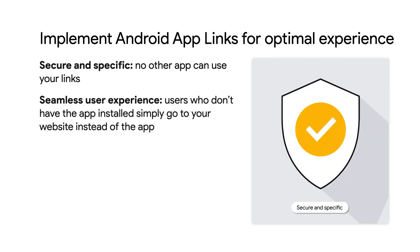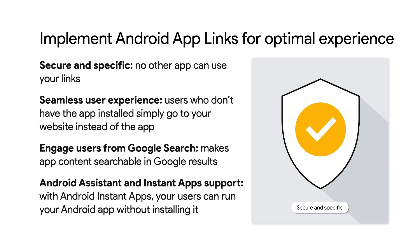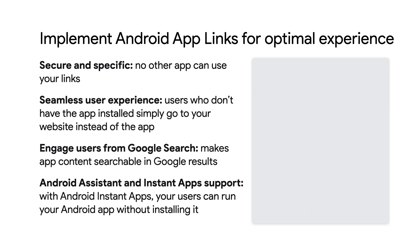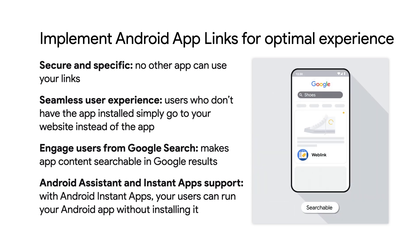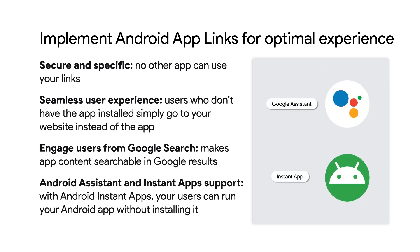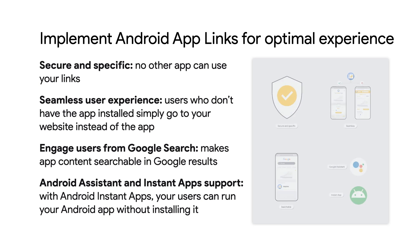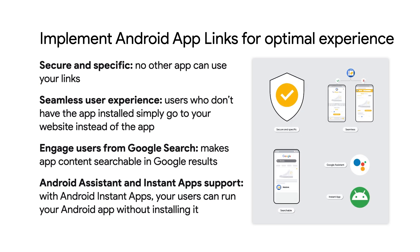There are different types of deep links, but for the best experience, we highly recommend implementing the native Android app links, which are more secure and specific because you prove ownership of the domain, so no other app can claim they own the same domain and user links. They also provide a seamless user experience with a single HTTP URL for the same content on your website and in your app. Users who don't have the app installed simply go to your website instead of the app — a behavior that doesn't exist in custom URL schemes, even though it's critical for the user experience.